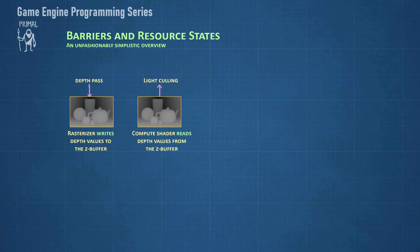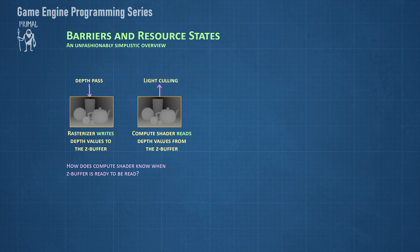Imagine we want to use the depth information from a scene to determine which lights affect what parts of the world viewed by the camera. First, we generate the depth image of the scene using a depth-only pass, which writes the depth values of all rasterized pixels to the z-buffer. Next, we read this information in a compute shader to calculate light intersections with the objects in the scene. Because not every object is lit by every light in the scene, this greatly reduces the work needed to determine the color of each pixel. Obviously, we only want to read from this buffer when the depth pass has finished writing depth values.